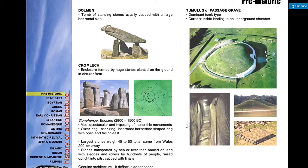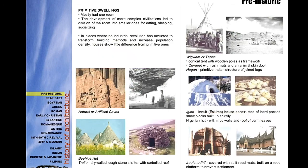Going back to prehistoric architecture — the megalithic structures: the dolmen is a tomb of standing stones usually cut with a large horizontal slab. The cromlek is a circular arrangement of stones. The tumulus or passage grave is a mound of earth with the burial chamber underneath.